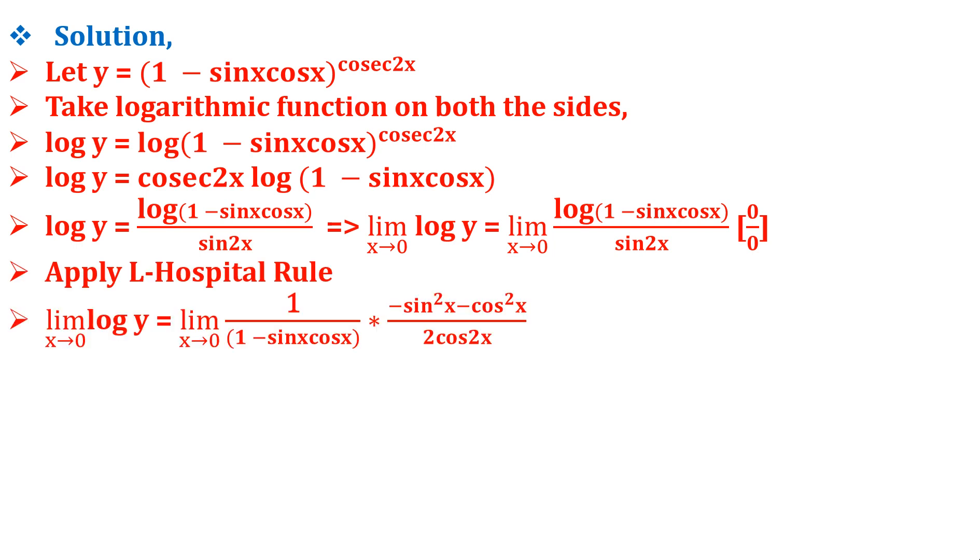us limit x tends to 0 log y = limit x tends to 0 of [1/(1 - sin x cos x)] multiplied by [-(sin² x + cos² x)] / (2 cos 2x),